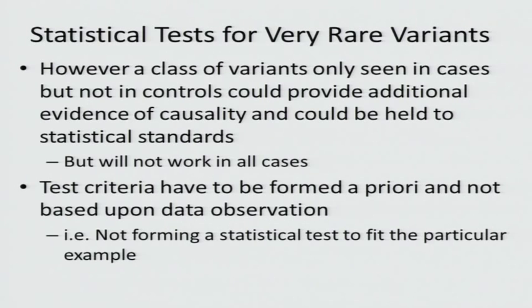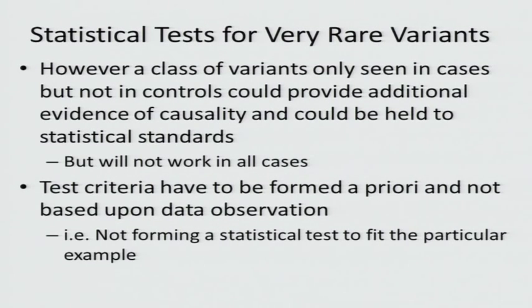For some statistical tests for very rare variants: if we have a class of variants only seen in cases but not in controls, that could provide additional evidence of causality and could be held to high statistical standards. However, in many cases this is not going to work. We have to be very careful: when we perform our statistical tests, we often peek at our data and say, 'if we just test for this difference, we'll find something.' If you peeked at your data, you are actually performing multiple testing without formally doing the tests, so we have to be very careful about that.